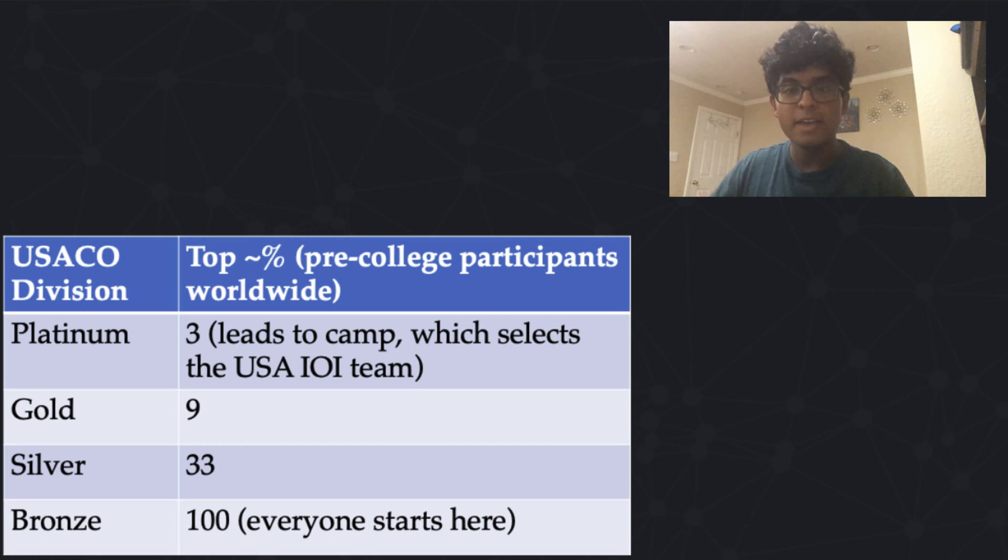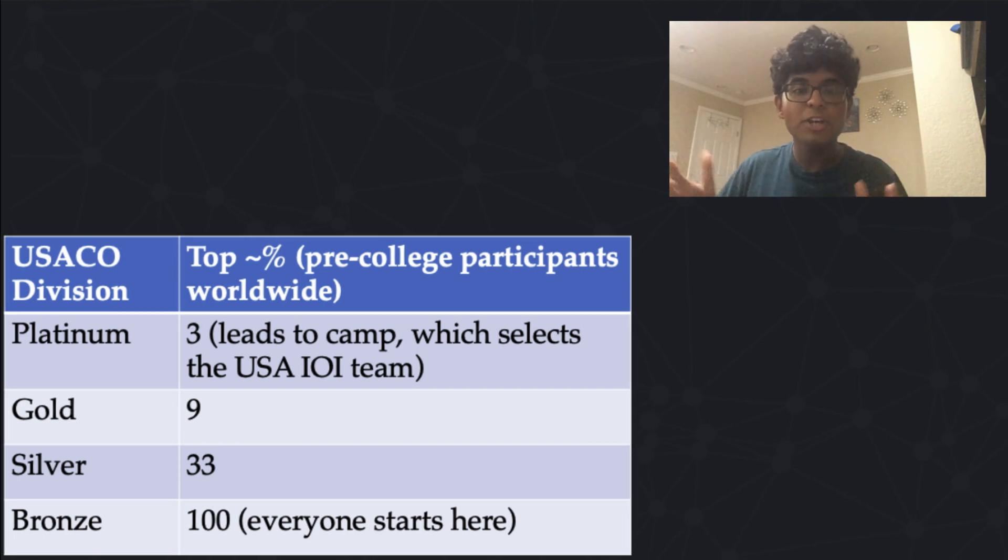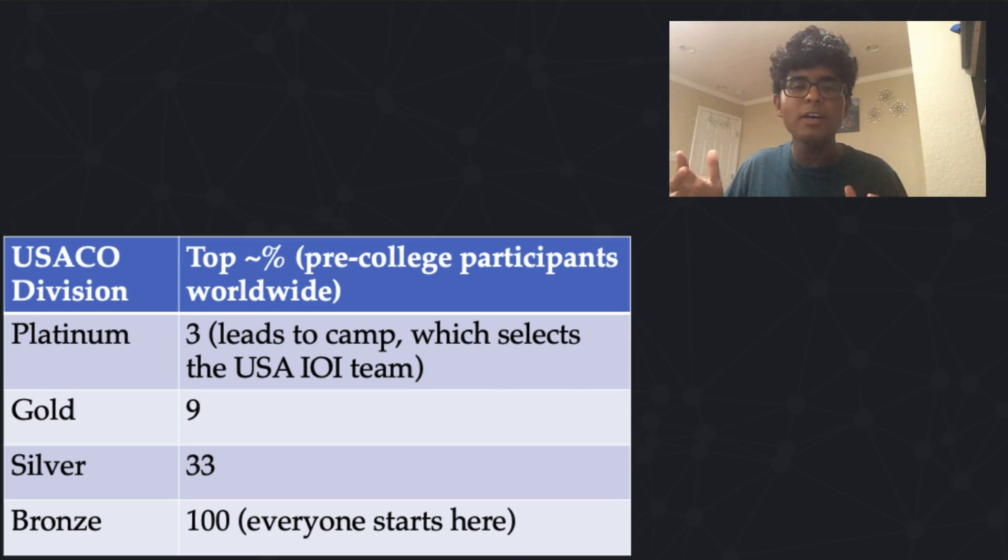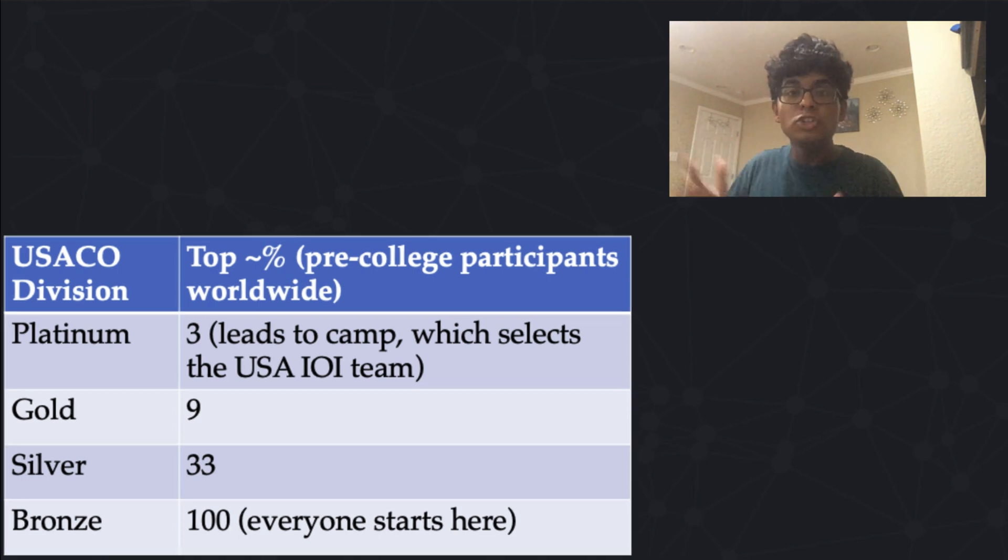USACO, or the USA Computing Olympiad, is a computer science olympiad consisting of several divisions, bronze to platinum, that invites competition among aspiring computer scientists around the world, ultimately selecting the USA team for the IOI, the International Olympiad in Informatics. As you can see in this diagram, the platinum division is the penultimate stage in the selection process, consisting of only the top 3% of all international pre-college participants. Recognized as some of the best computer scientists worldwide, USACO contestants who qualify for the platinum division and beyond are also given a huge boost in apps for college and selective CS programs.